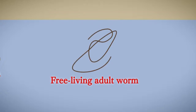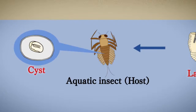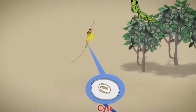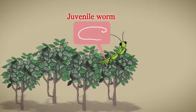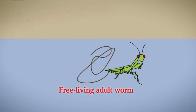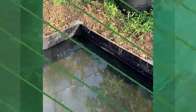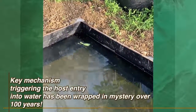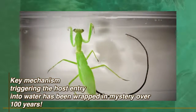Hairworms have a complex life cycle. When the hairworms fully mature inside of their terrestrial insect hosts, they induce their hosts to enter streams or ponds. This is one of the most fascinating examples of host manipulation by a parasite. But the key mechanism triggering the host entry into water has long been wrapped in mystery.